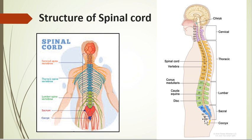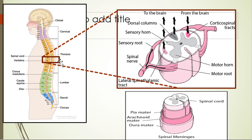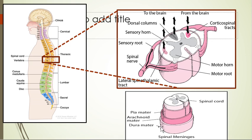Looking at a cut section of spinal cord, we can see its internal structure. Spinal nerves are composed of two roots: a dorsal root, which is the afferent or sensory root, and a ventral root, which is the motor root. Both combine to form the spinal nerve. The spinal cord is covered with meningeal layers — outermost is dura mater, middle is arachnoid, and innermost is pia mater — same layers that cover the brain.